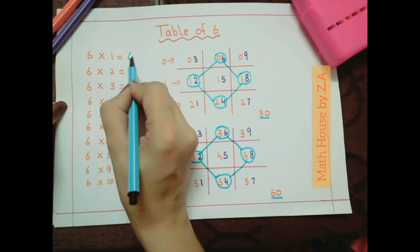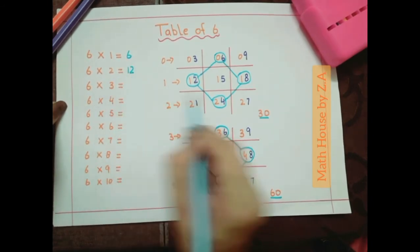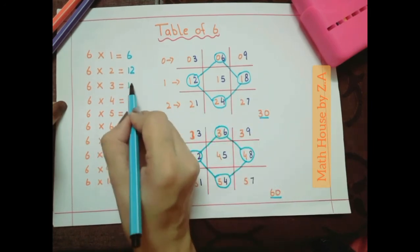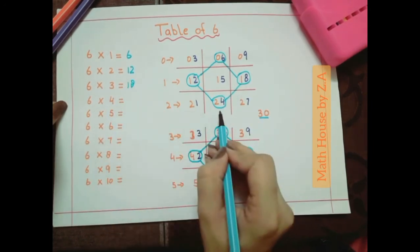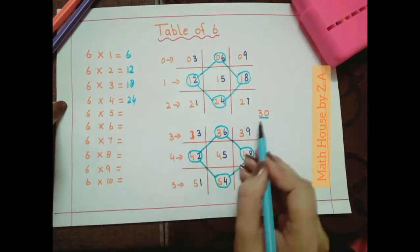6 ones are 6. 6 twos are 12. 6 threes are 18. 6 fours are 24. 6 fives are 30.